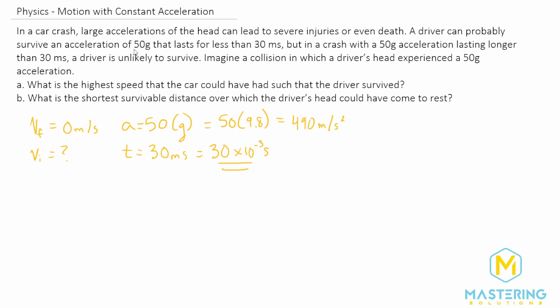And let's see, is there anything else we can get from here? I don't believe so. Okay. So now for part A, we're trying to find the highest speed for initial velocity. So we'll be using the maximum values for everything. We'll use the full 50 Gs and we want the 30 milliseconds.